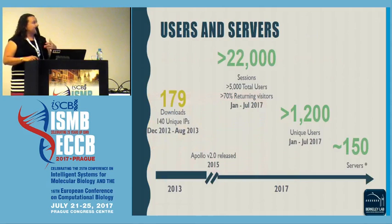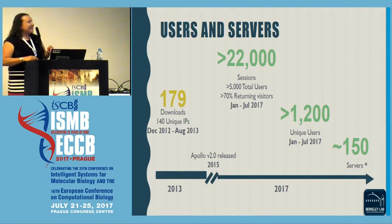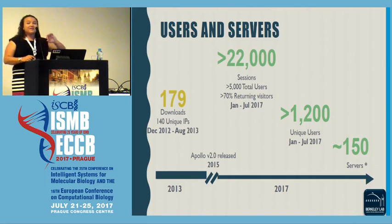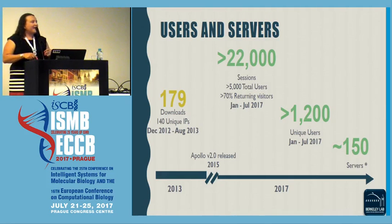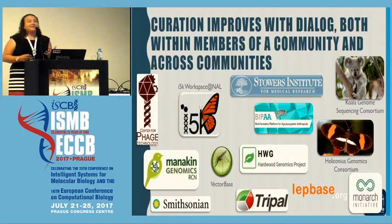As a result of this community engagement, in 2013 when we last released our desktop version we had about 180 downloads from 140 unique IPs. After we released our second web-based version with improved architecture, we've had in the past six months approximately 22,000 sessions with more than 5,000 total users. About 1,200 unique users have been using the tool in the past six months, amounting to about 150 servers globally — and since one server can have several organisms, there may be more than 150 organisms being annotated. I truly believe that curation improves when there is dialogue within and between communities.